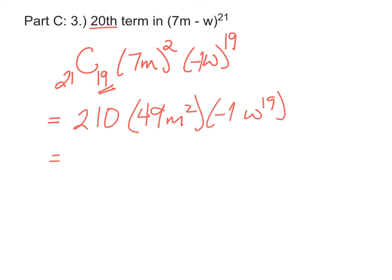Now, just calculate 210 times 49 times negative 1, and it'll be negative 10,290 m squared, w to the 19th.